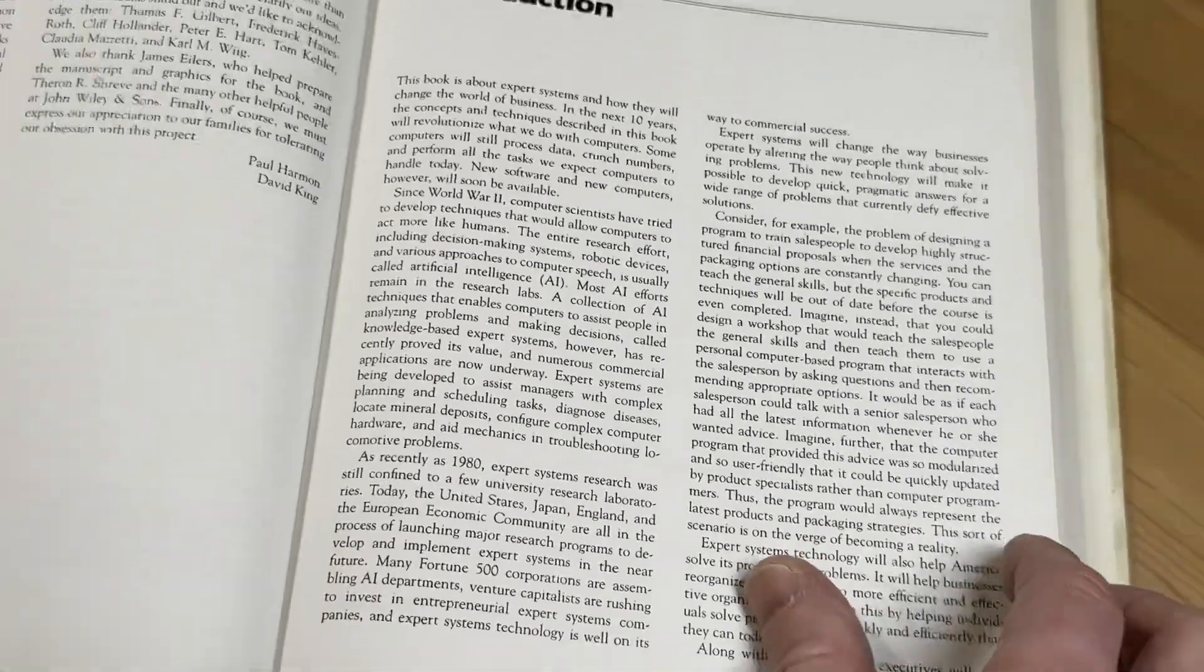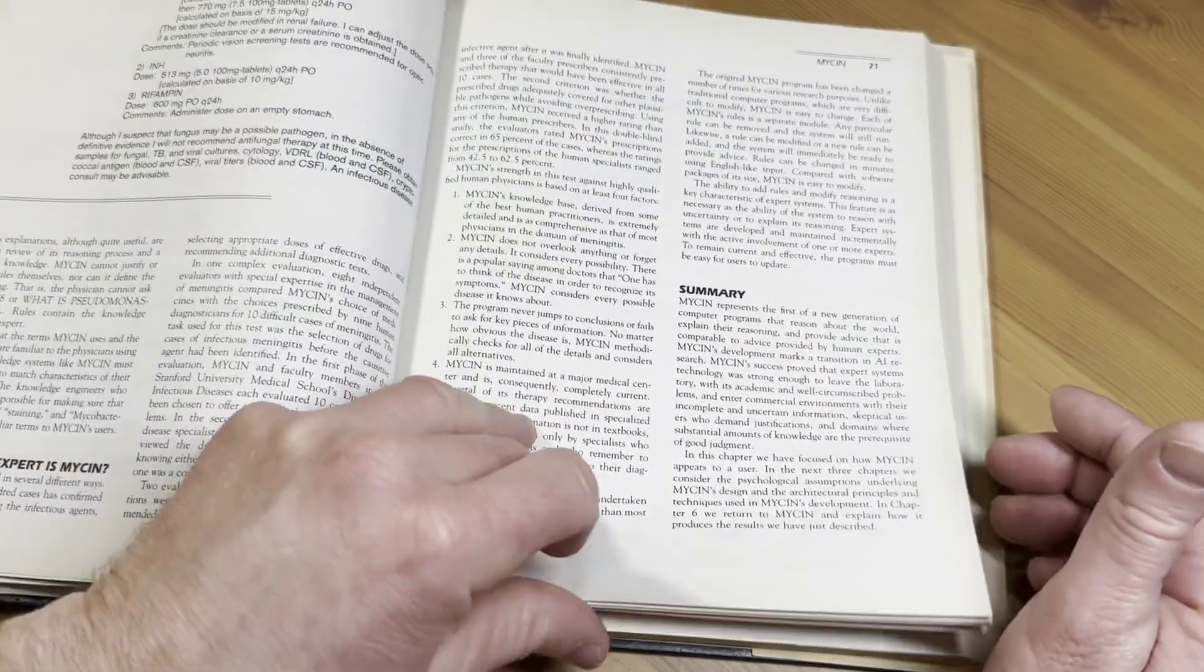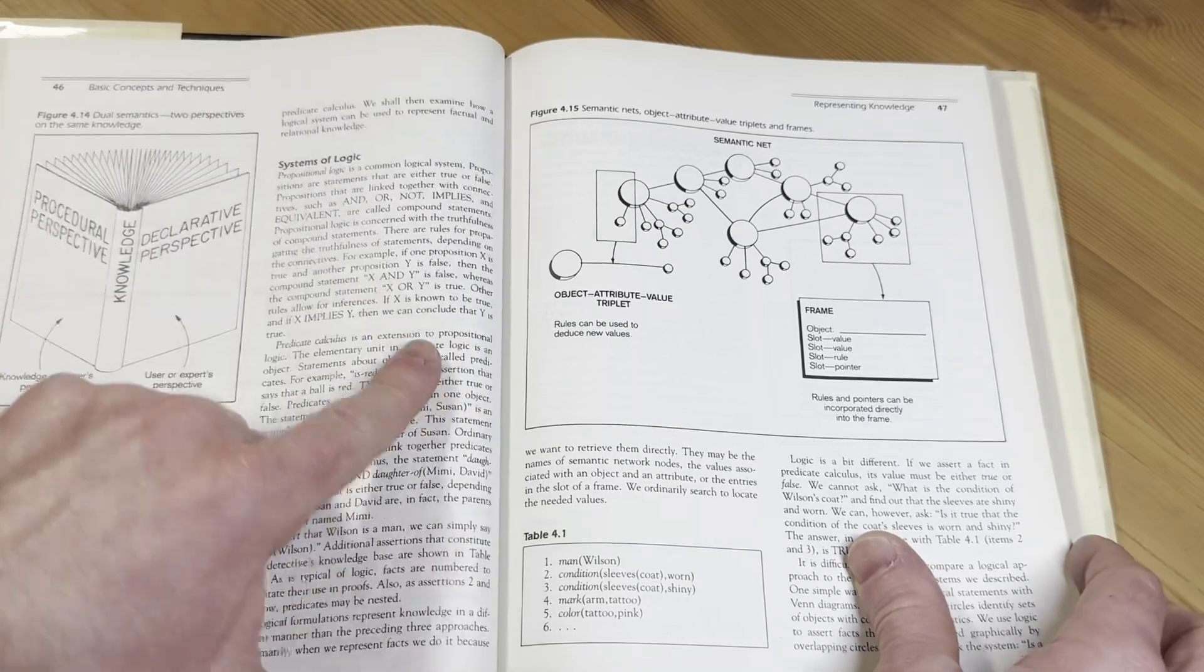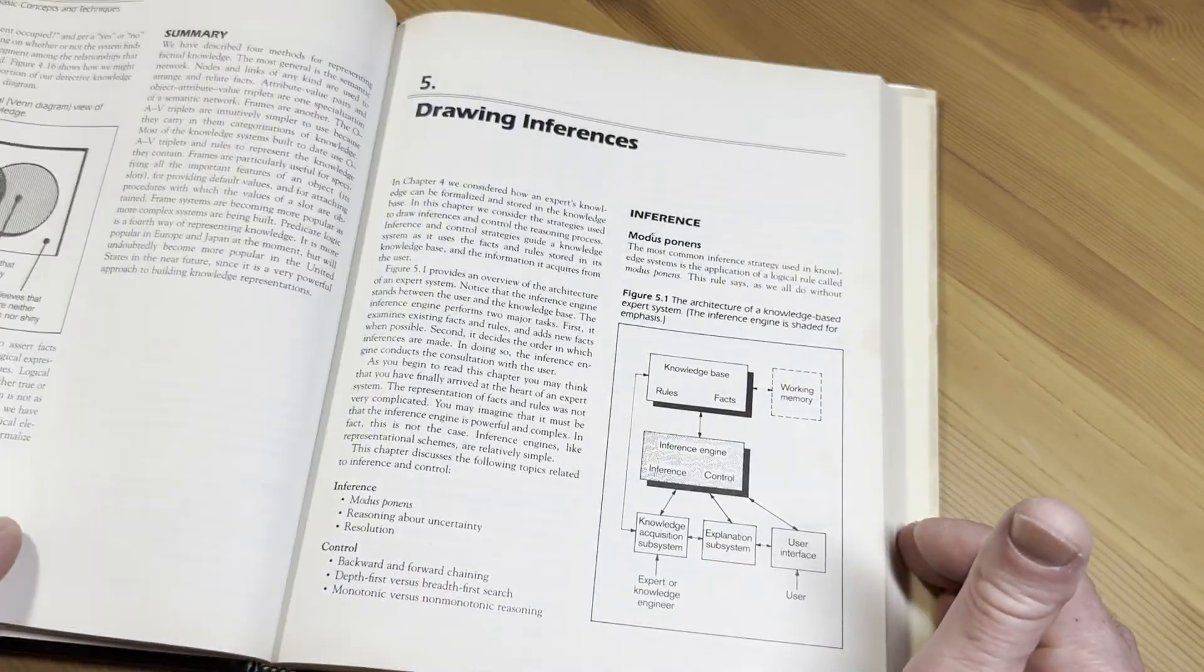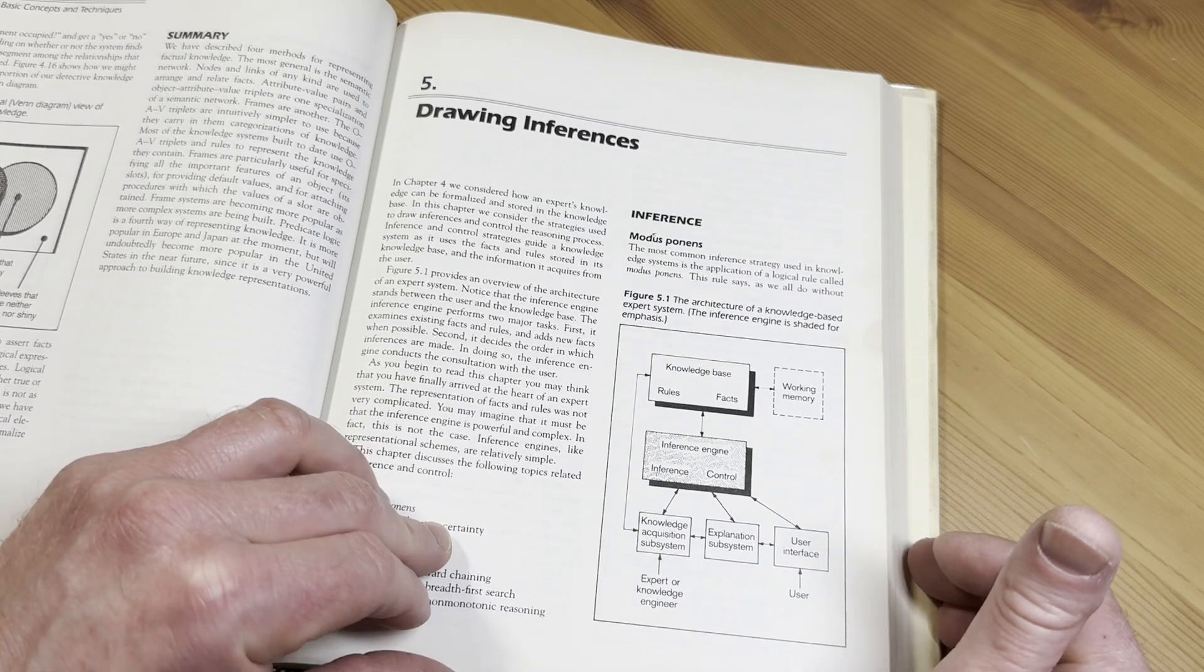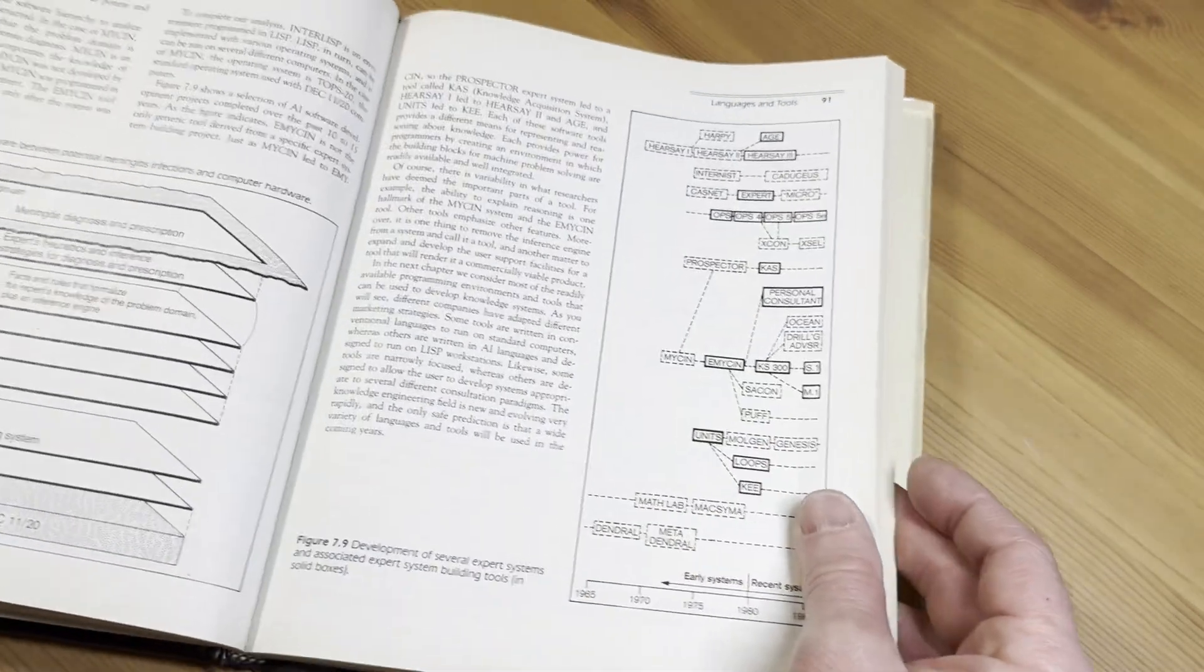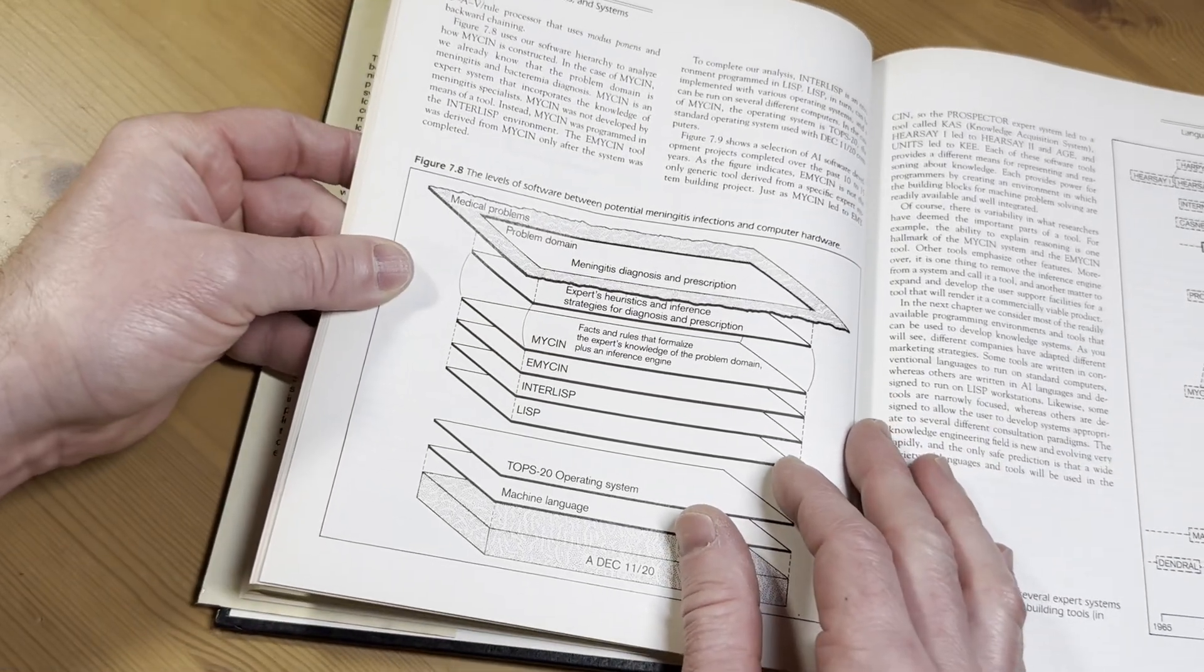So let's just go through it so you can see it's a pretty hardcore book. Let's just go through it so you can see systems of logic, semantic net. This says here, the levels of software between potential meningitis, infections, and computer hardware.